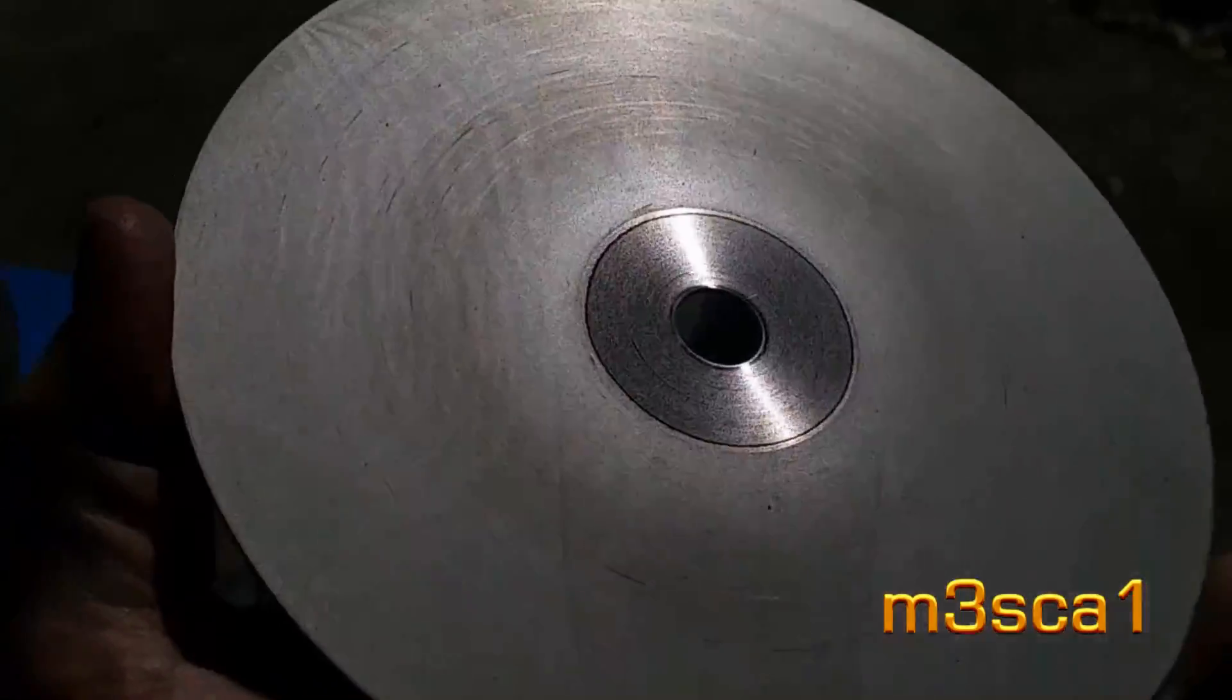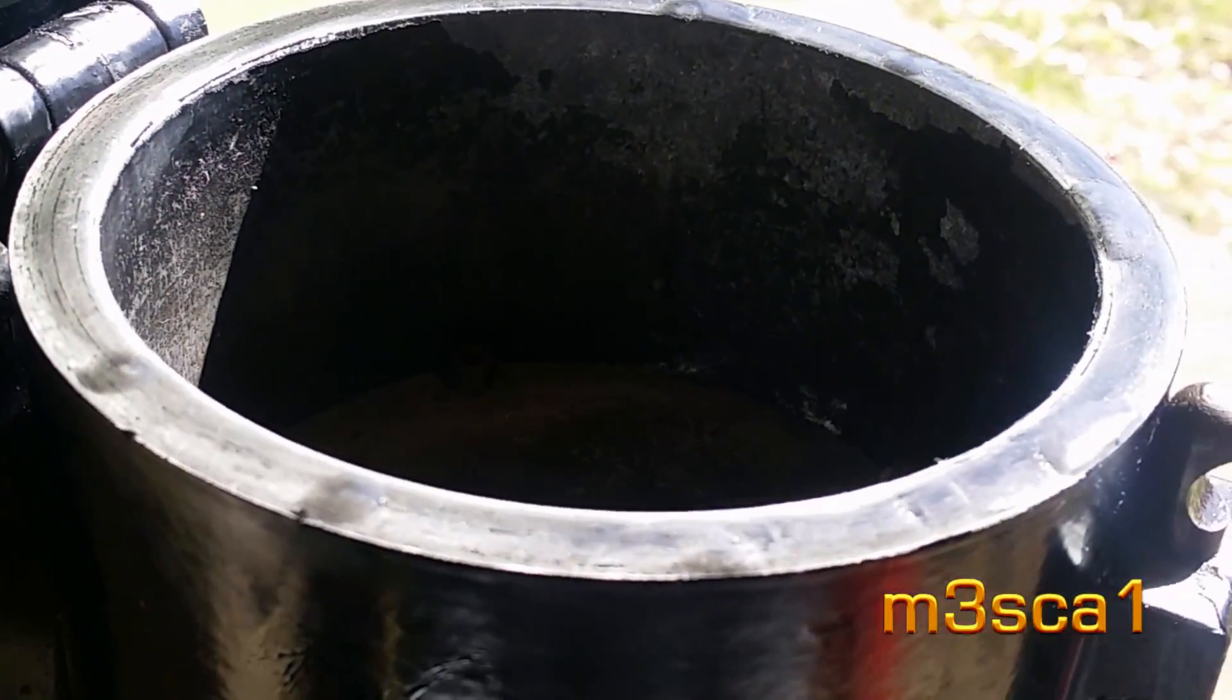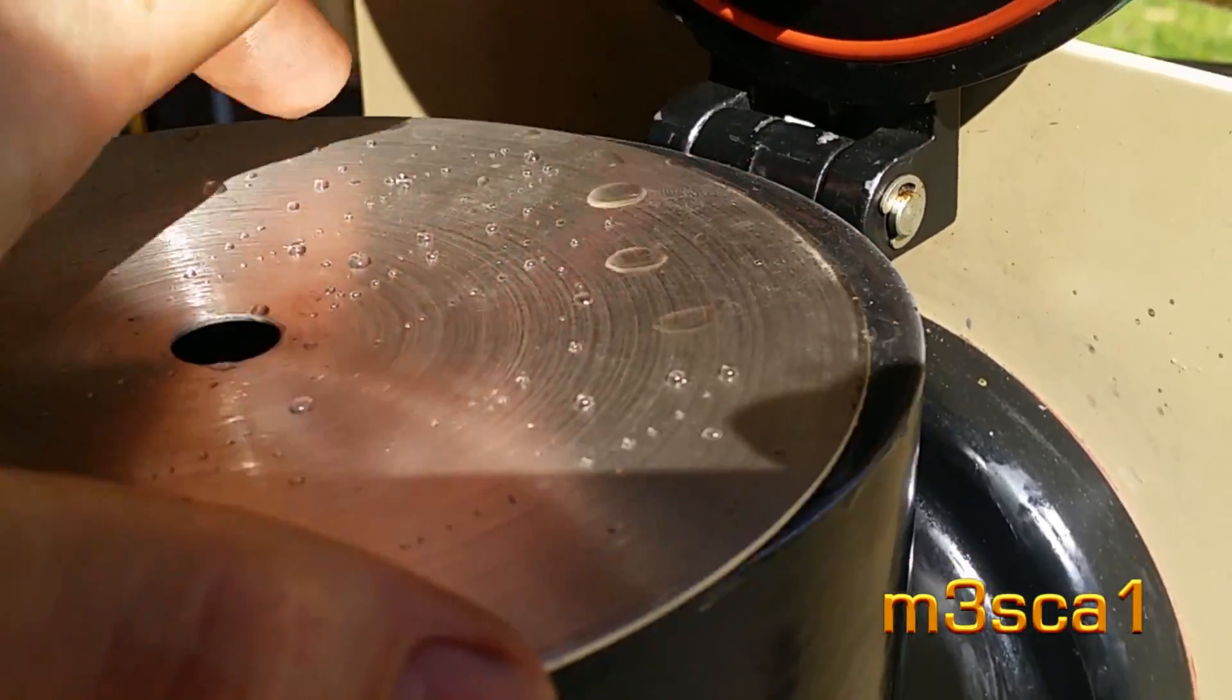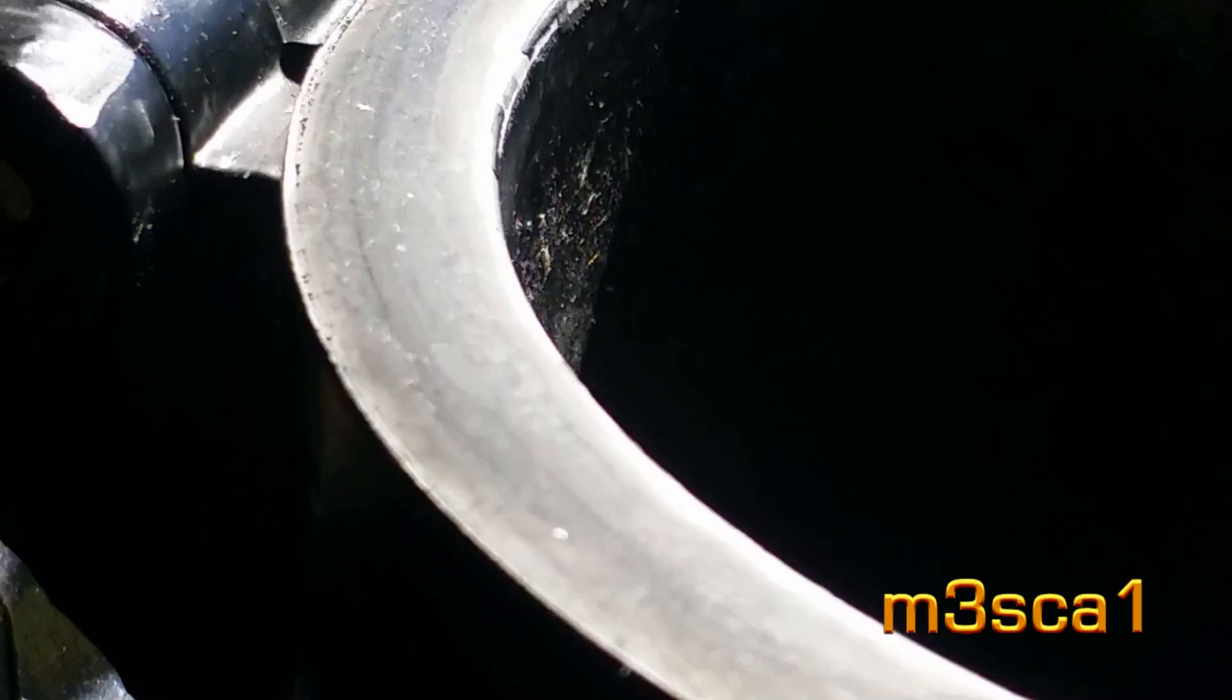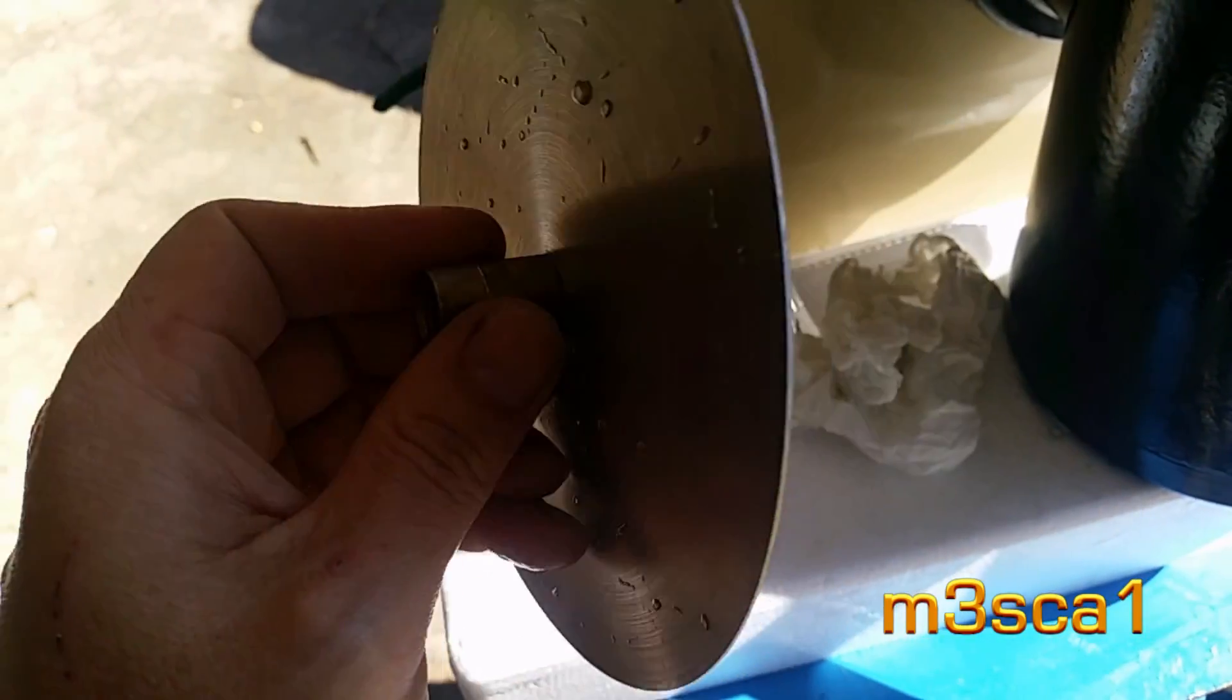This is a 1200 grit diamond wheel. I'll use that to lap the top, get that all nice and smooth. Just wetting it and grinding it - you can see the flat spots where the high points are. Put that on the middle to make it easier to handle.